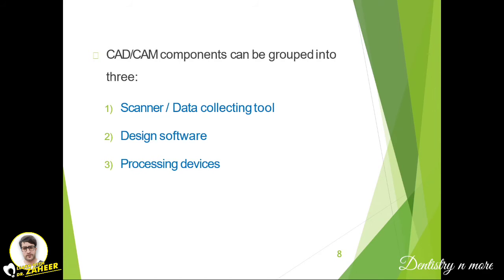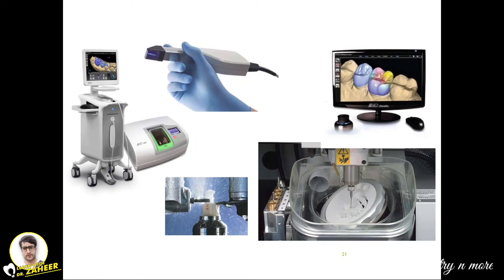The components of CAD CAM are the most crucial part. It has three sections: the first is the data collecting tool or scanner — similar to the impression method we commonly use in clinics, but here we use a scanner to collect data. The second part is designing software, done by computers. The third is the processing device. In summary: the scanner records the impression, then the computer with software determines all required data, which is then transferred to the milling unit, and finally the product is ready.